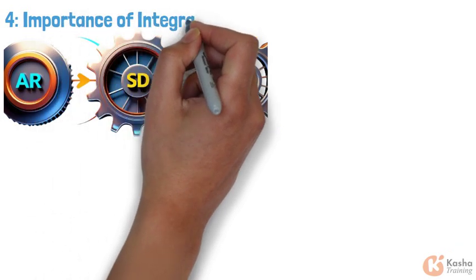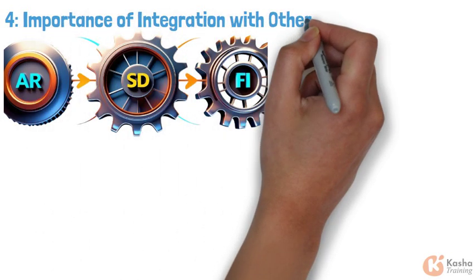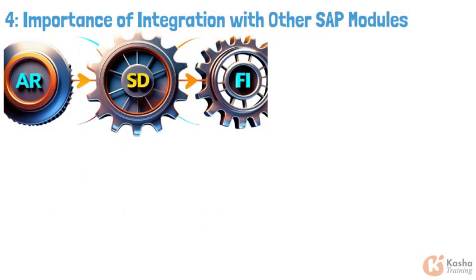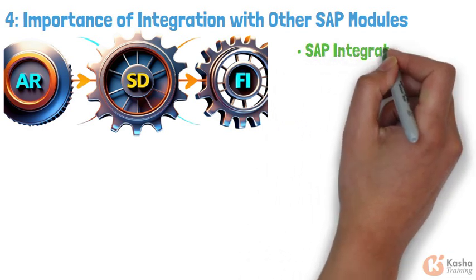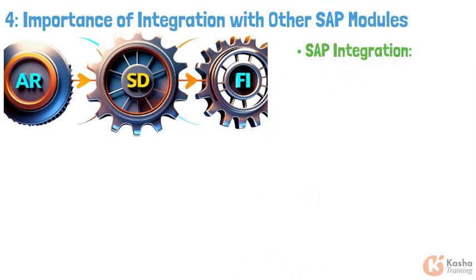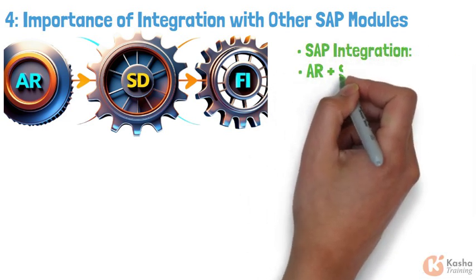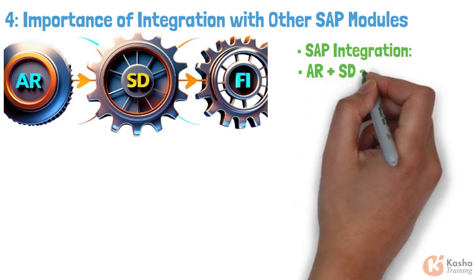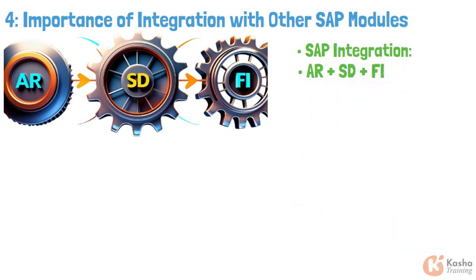The accounts receivable process is closely integrated with other SAP modules like Sales and Distribution (SD) and Financial Accounting (FI). This integration allows for automatic posting of invoices and credits, providing real-time visibility into what customers owe.